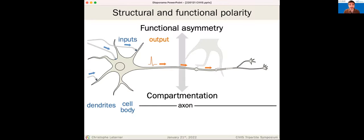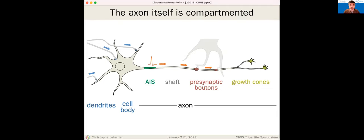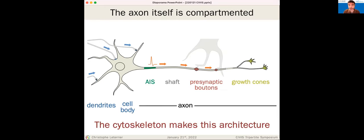This structural compartmentation reflects and underlies the organization at the functional level — inputs are on the dendrite and cell body, while the action potential is generated at the initial segment of the axon and propagates to downstream cells. The axon itself is also compartmented: you have the axon initial segment, the axon shaft, presynaptic boutons contacting target cells, and in growing axons, the growth cone at the tip. This architecture relies on a unique organization of the cytoskeleton.